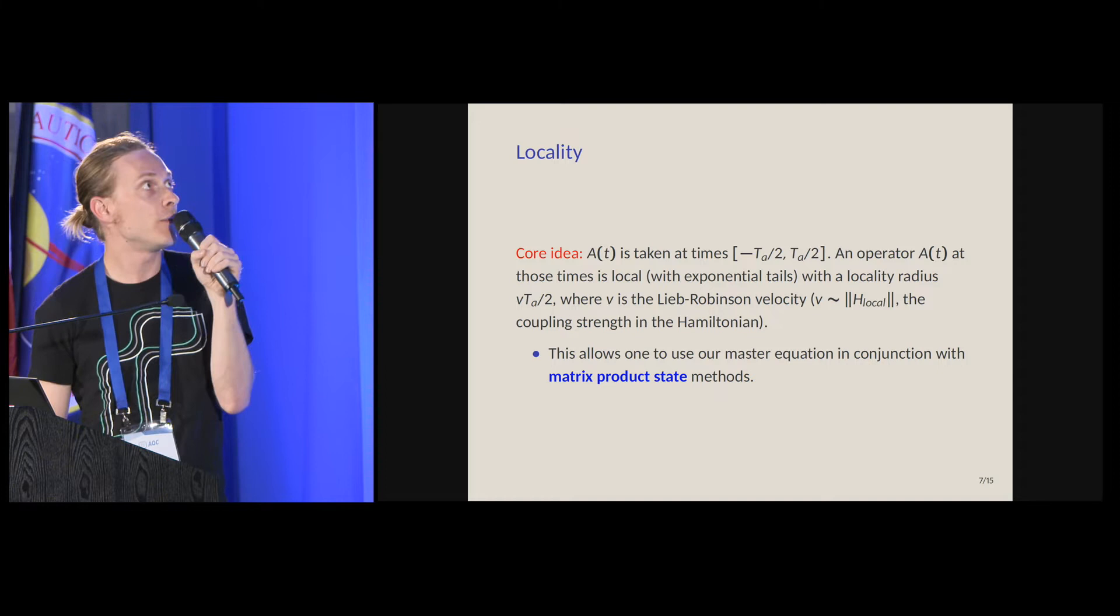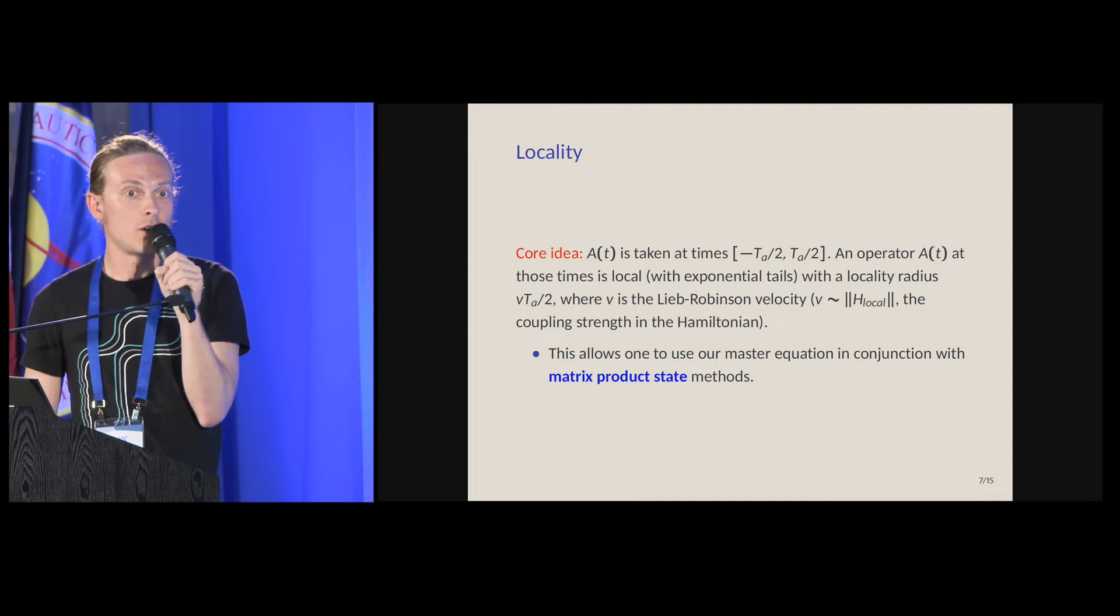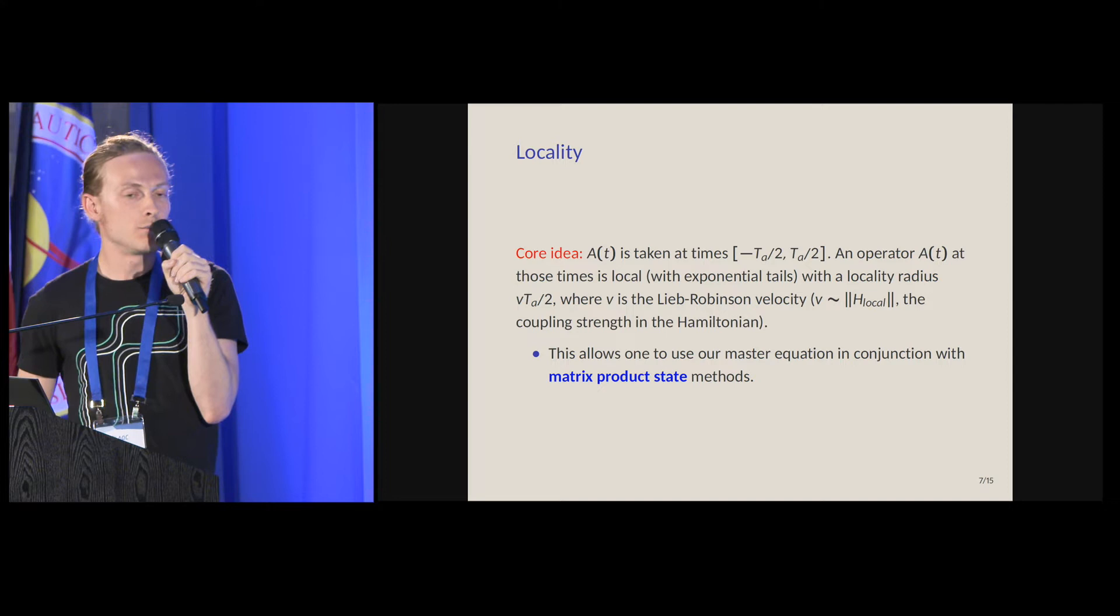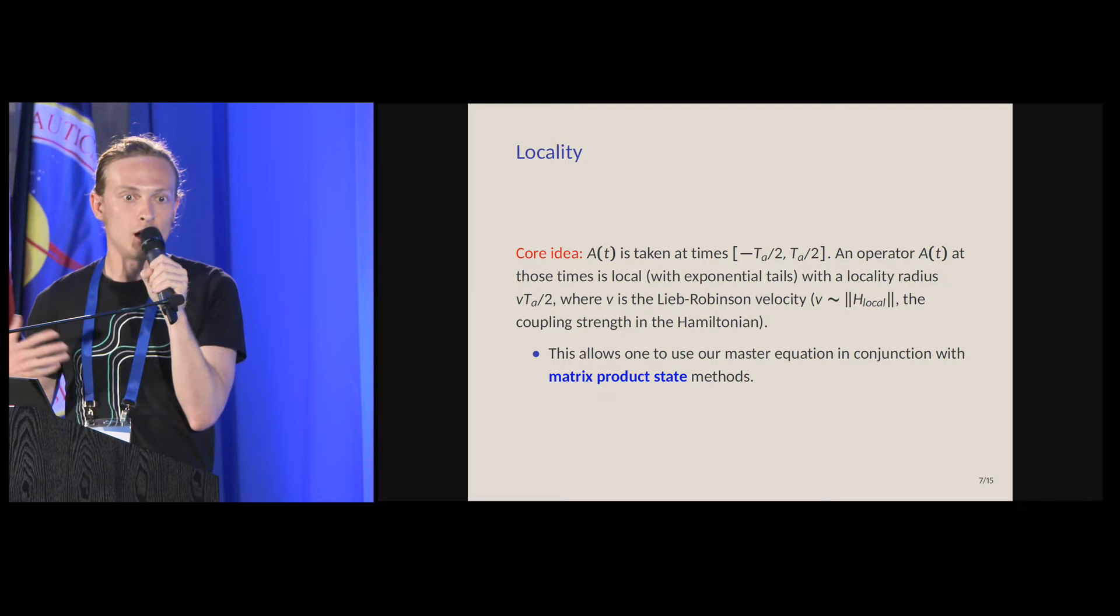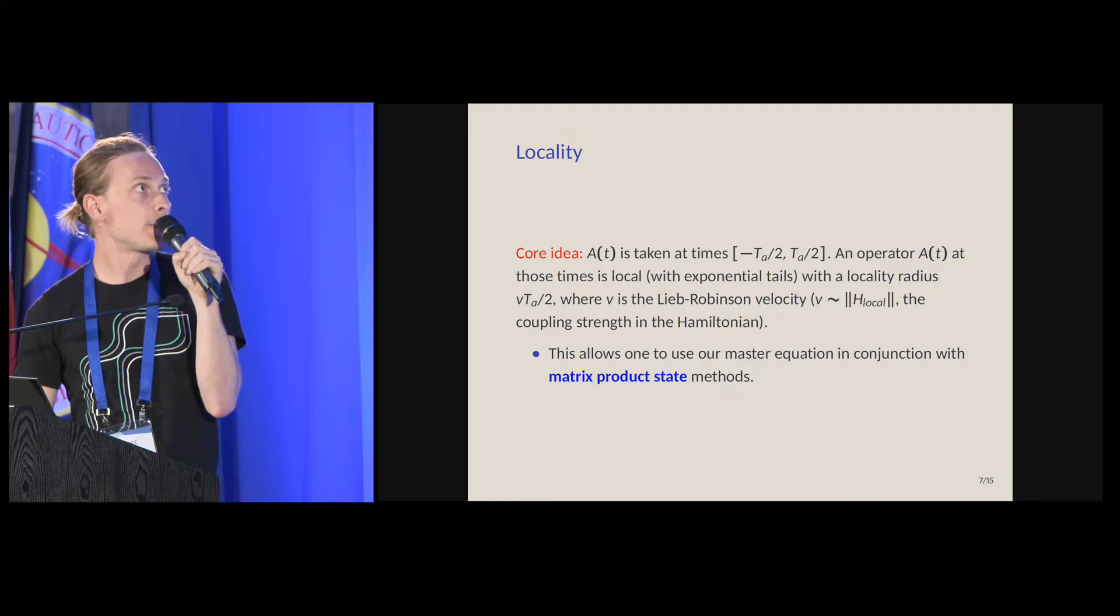This means that the equation in the previous slide is actually locally generated. We can just take our favorite matrix product state method and then do a time step with this equation. More specifically, we will write a trajectories formulation of this equation, and then we apply it to the matrix product state. This will increase the bond dimension only in such a way that truncation will take polynomial time.